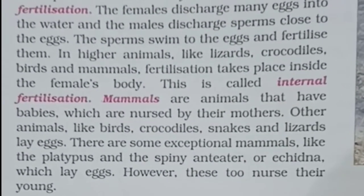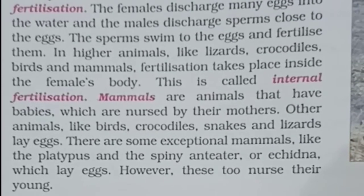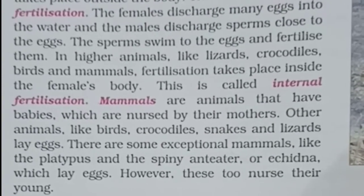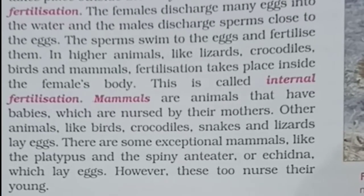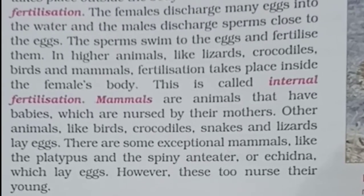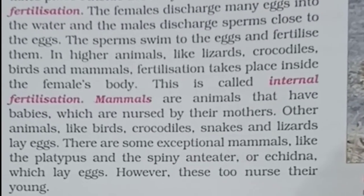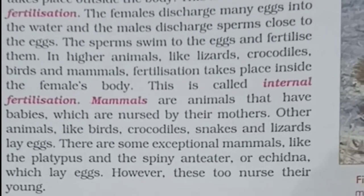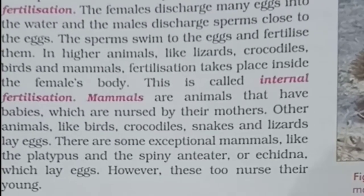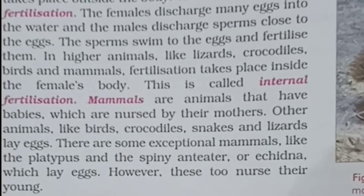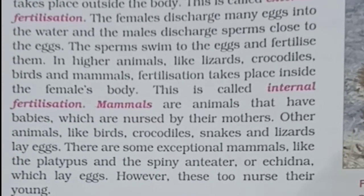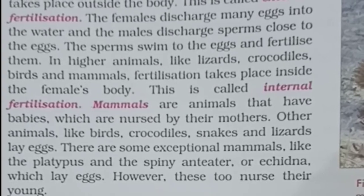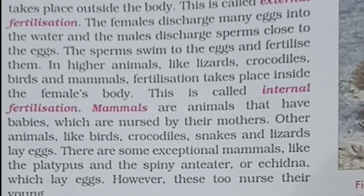Mammals are animals that have babies which are nursed by their mothers. Other animals like birds, crocodiles, snakes and lizards lay eggs. There are some exceptional mammals like the platypus and the spiny anteater or the echidna — they lay eggs, however, these also nurse their young ones.